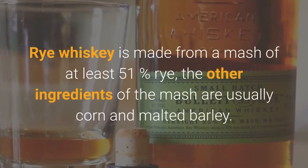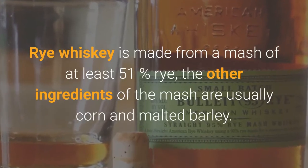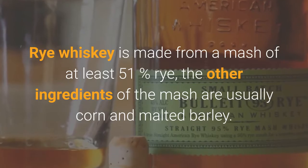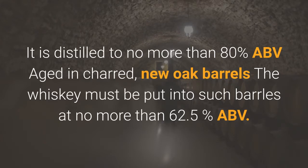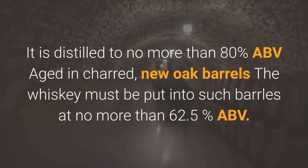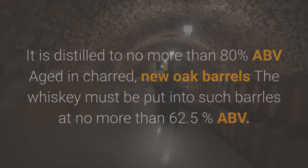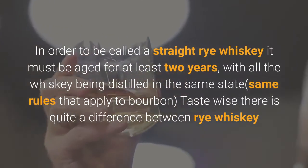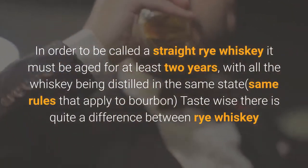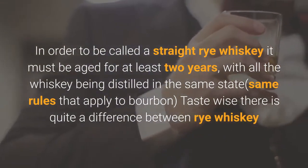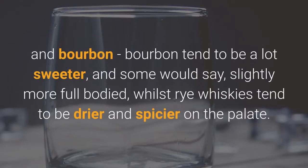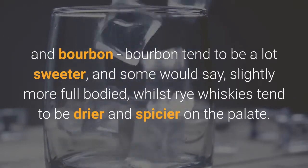Rye whiskey is made from a mash of at least 51% rye — the other ingredients are usually corn and malted barley. It is distilled to no more than 80% ABV and aged in charred new oak barrels. The whiskey must be put into such barrels at no more than 62.5% ABV. In order to be called a straight rye whiskey it must be aged for at least two years, with all the whiskey distilled in the same state — the same rules that apply to bourbon. Taste-wise, bourbon tends to be a lot sweeter and some would say slightly more full-bodied, whilst rye whiskies tend to be drier and spicier on the palate.